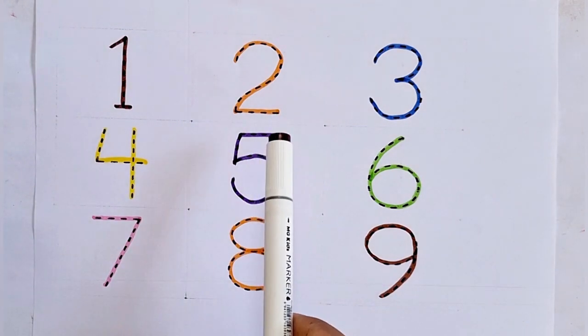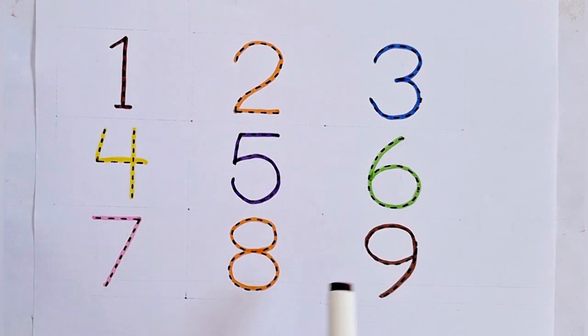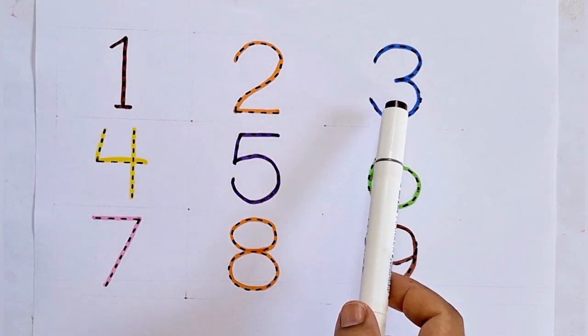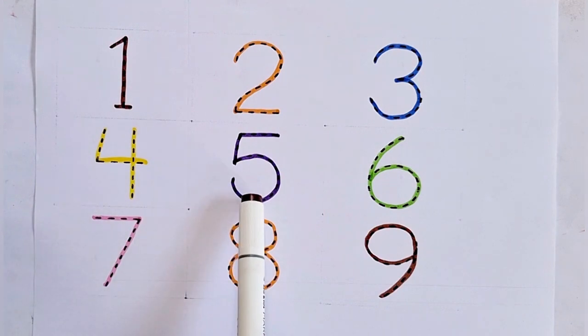Let's learn counting from one to nine again: one, two, three, four, five, six, seven, eight, nine.